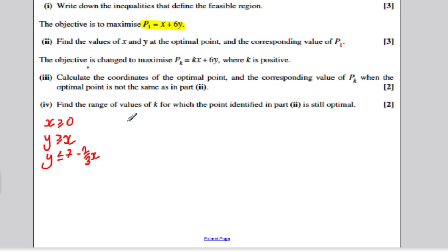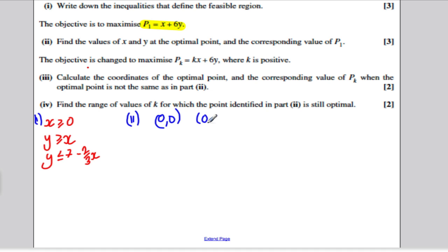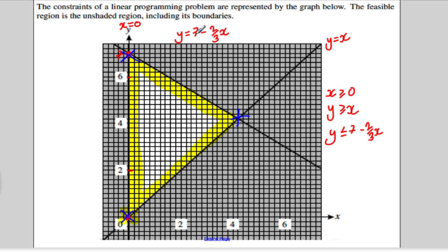So the points we need to check for part 2 are the coordinates 0,0, the coordinate 0,7, and the coordinate where the line Y equals X intersects with the line 7 minus 2 thirds X.